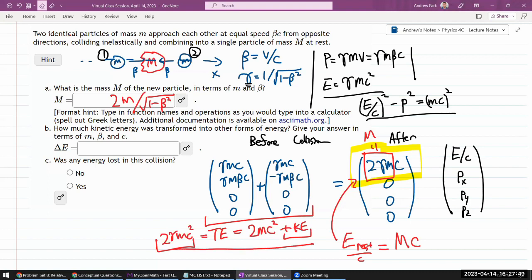So solving this expression for kinetic energy, I get kinetic energy that was there before is 2 gamma MC squared minus 2 MC squared. So the difference between the two rest energies. So just factoring out, it'll be 2 MC squared times 1 over square root of 1 minus beta squared minus 1.